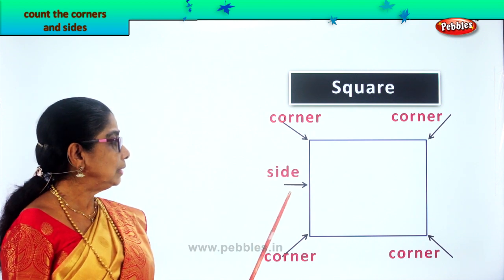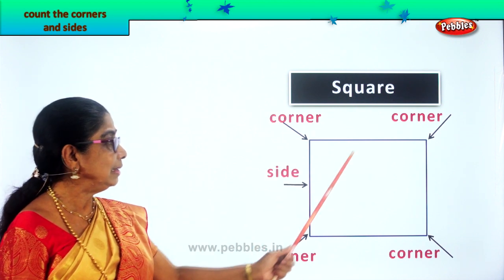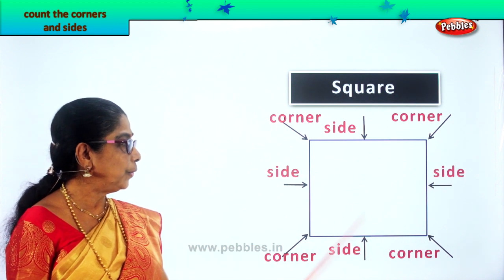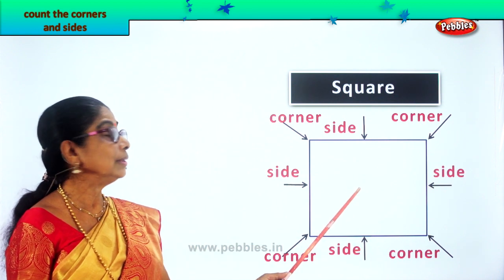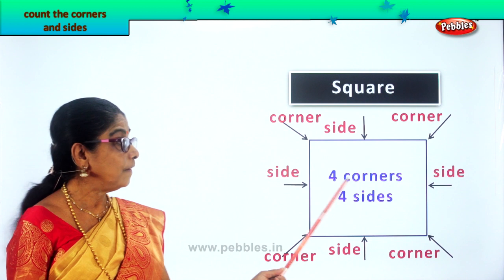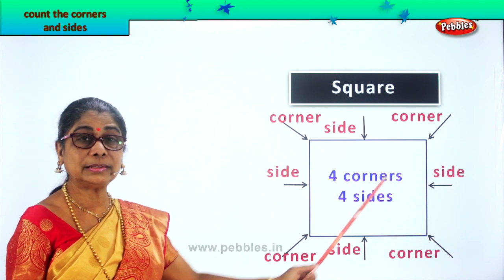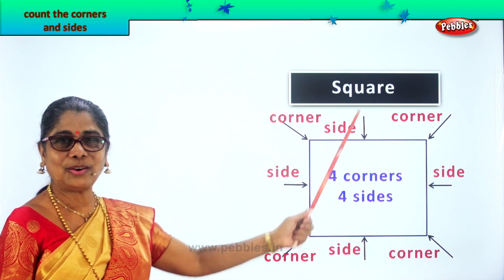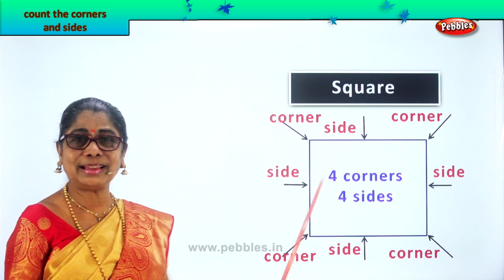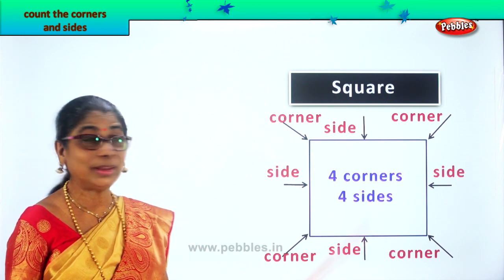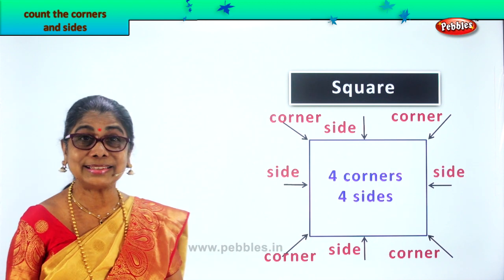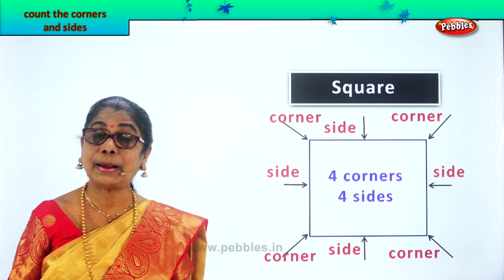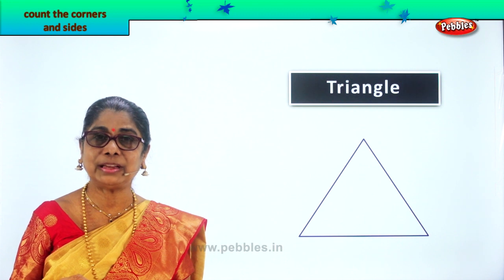Now let's count the sides. First one side, two, three, four. Our square has four corners, four sides. All the opposite sides are equal. Did you enjoy counting the corners and the sides? Good. Let's look at another plain figure.